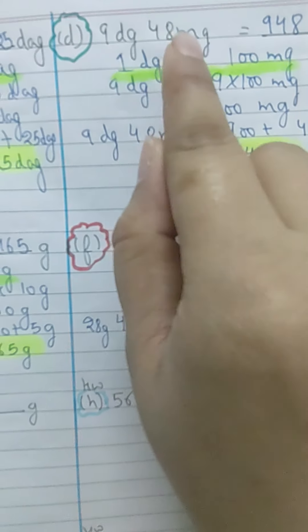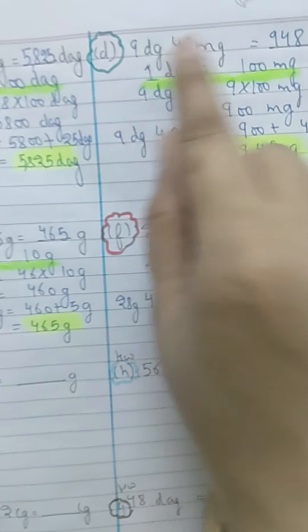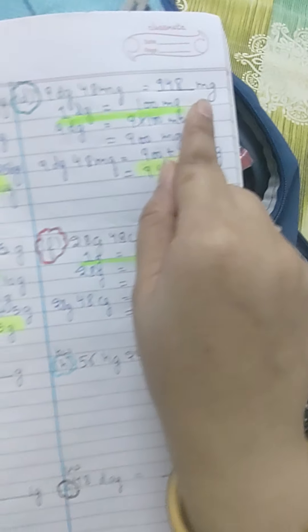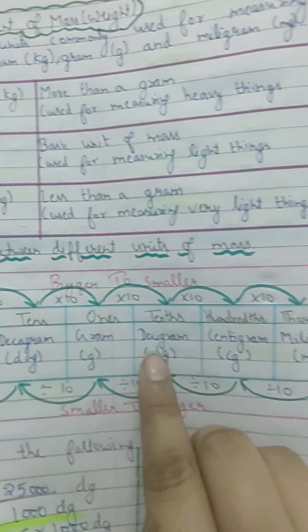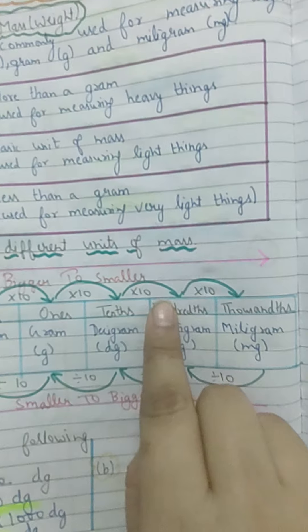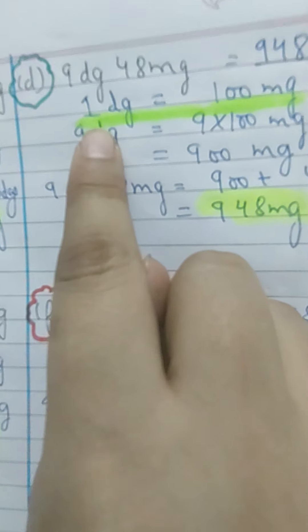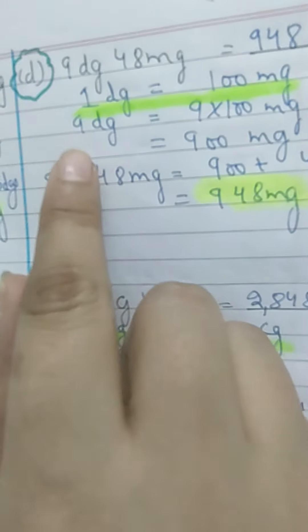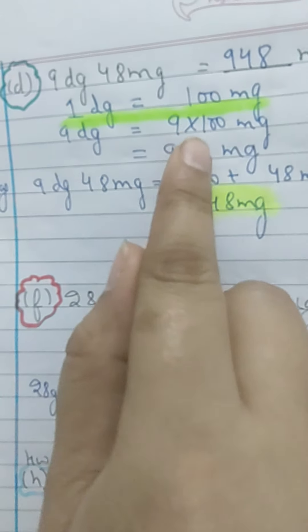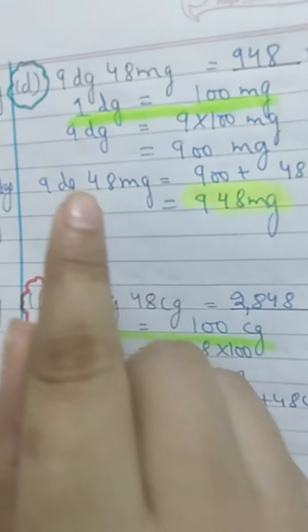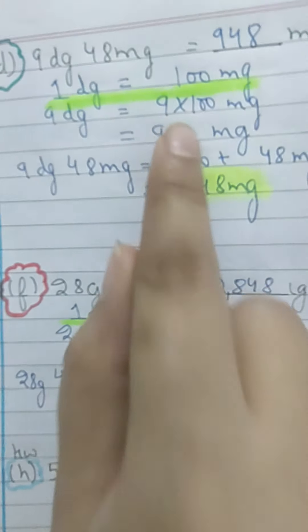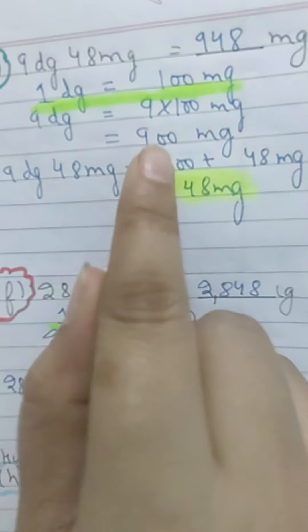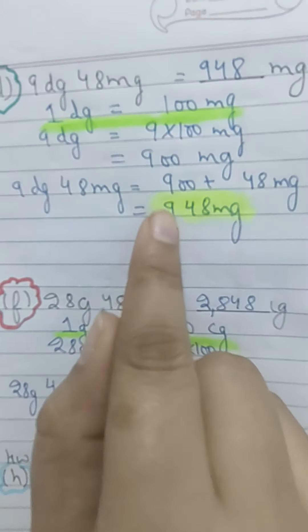Next: 9 decagram 48 milligram — convert to milligram. From decagram to milligram: decagram → gram → decigram → centigram → milligram — actually, decagram to centigram is two jumps, so we multiply by 100. 1 decagram equals 100 milligram. So 9 decagram = 9 × 100 = 900 milligram. Then 900 + 48 = 948 milligram.